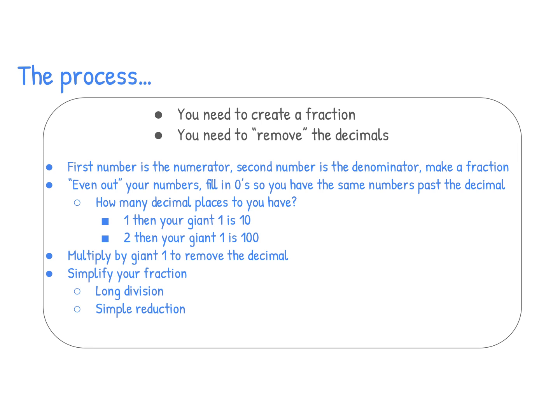The next step would be to multiply your new fraction by a giant one. This is going to remove your decimal. Then you want to simplify your fraction using long division or simple reduction and then long division. Let's try a few examples.